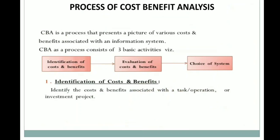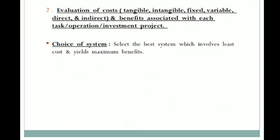The process of cost-benefit analysis goes as follows. First, identification of the cost and benefit associated with the task, operation, or investment project. Second, evaluation of the cost — whether it is fixed, variable, direct, or indirect — and the benefit associated with each task, operation, and investment project. Then, make a choice by selecting the best system which involves the least cost and yields maximum benefits.